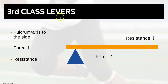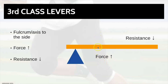Finally, we have third class levers. Again, the fulcrum or axis is to one side of the bar. But this time the resistance and force are different. The force is pushed or pulled up from the centre or near to the fulcrum or axis, and the resistance is right over on the other end, pulling or pushing down.